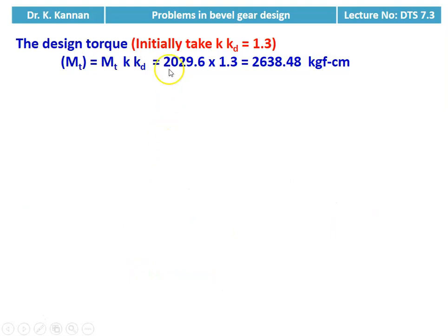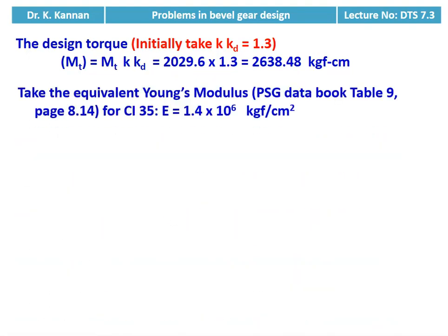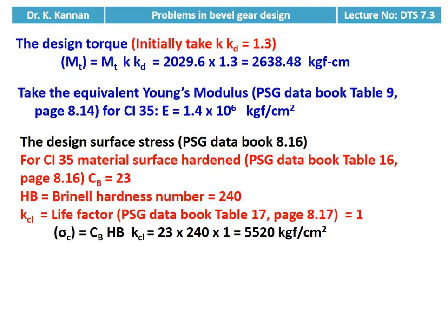Then we calculate the design torque. Initially we take KKd = 1.3, so MT(design) = MT × KKd = 2029.6 × 1.3 = 2638.48 kgf·cm. We take the Young's modulus for cast iron grade 35 from table 9, page 8.14: E = 1.4 × 10⁶ kgf/cm². Both gear and pinion are made of cast iron grade 35. For calculating surface stress, from page 8.16, CB = 23 and BHN = 240. Life factor KCL = 1, so sigma_C = CB × BHN × KCL = 23 × 240 = 5520 kgf/cm².